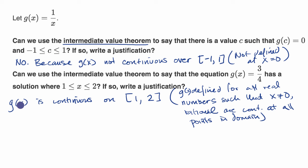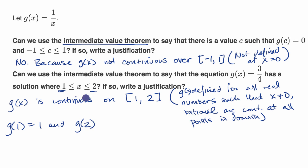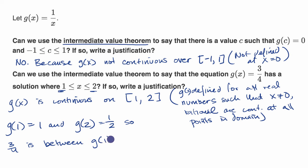We want to see what values g takes on at the endpoints. G of one is equal to one over one, which is one. And g of two is one over two, which is equal to one-half. So three-fourths is between g of one and g of two.